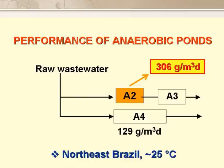This is some work we did with anaerobic ponds in northeast Brazil some 25 years ago — in fact it was the first work done on anaerobic ponds anywhere in the country. We had two anaerobic ponds in series, coded A2 and A3, and in parallel with these was another anaerobic pond, A4. The pond temperature was around 25 degrees throughout the year, and the loading on A3 was just over 300 g/m³/day, and on A4 just under 130 g/m³/day.